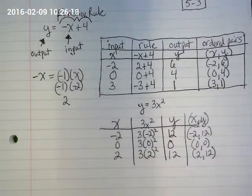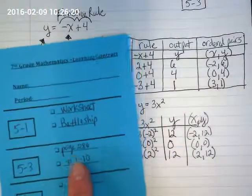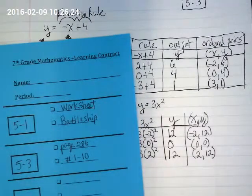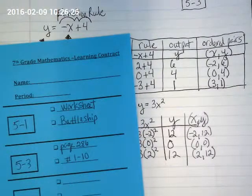Okay. So on your contract, when you guys came in, you wrote down page 286, numbers 1 through 10. I will pull that up on the screen and get some graph paper for you. And if you have questions, just let me know.